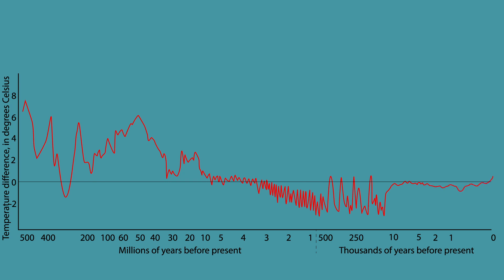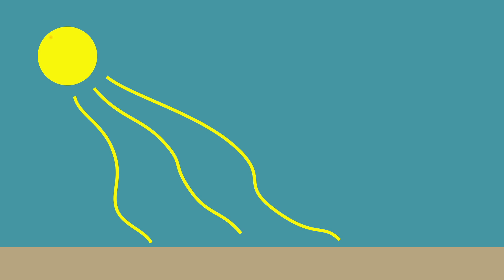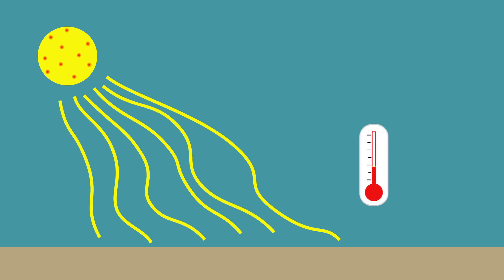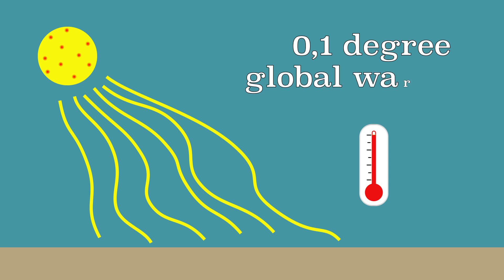First, the sun plays a role. When the sun is more active, sunspots can be seen. This can make it a little warmer on Earth, but this only involves a tenth of a degree of heating. The current global warming can therefore not be explained by a change in the activity of the sun.